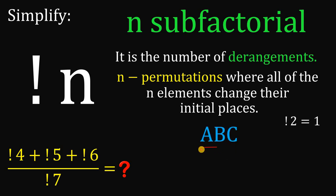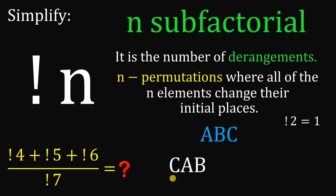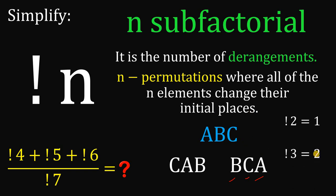Now, if we have three elements — a, b, and c — one way is to rewrite this as c, a, b, where none are in their initial positions. We can also rewrite a, b, c as b, c, a, where again none are in their initial positions. With three elements, there are two possible ways for all elements to change their initial places, so 3 sub-factorial equals 2.